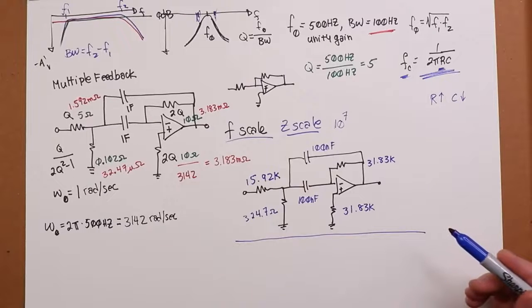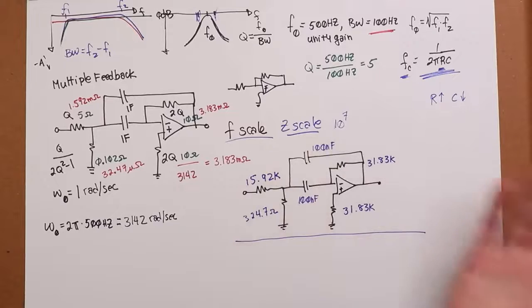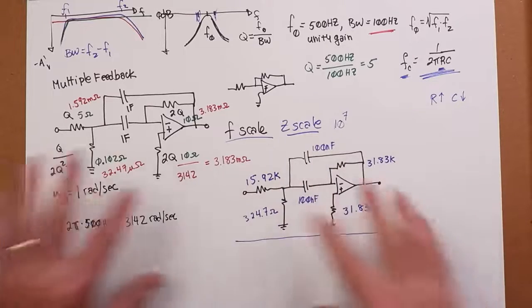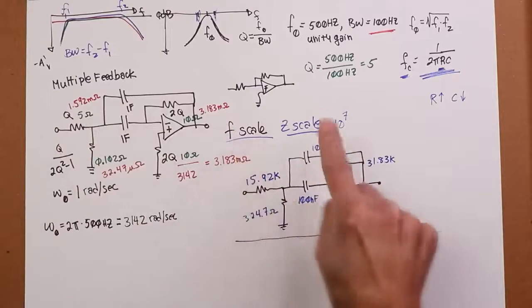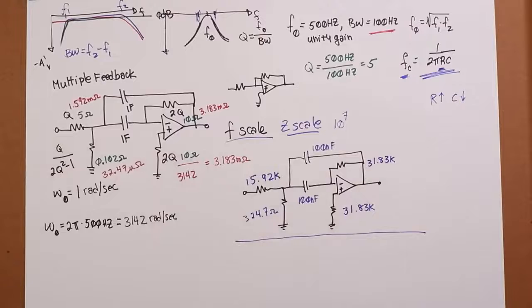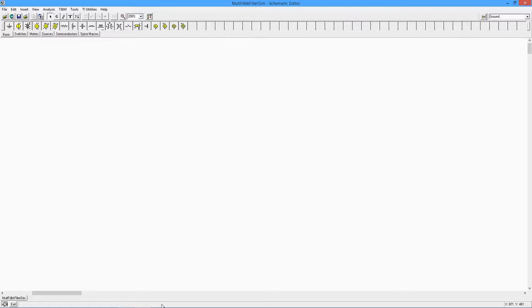If you needed a Q of 10 or 15 or 20, you would go to a state variable filter. A little bit more complicated, but it's still the same idea. You come up with a template, plug the values in, do your F scale, do your Z scale, there you go. Now we're here on Tina TI, ready to do a simulation.